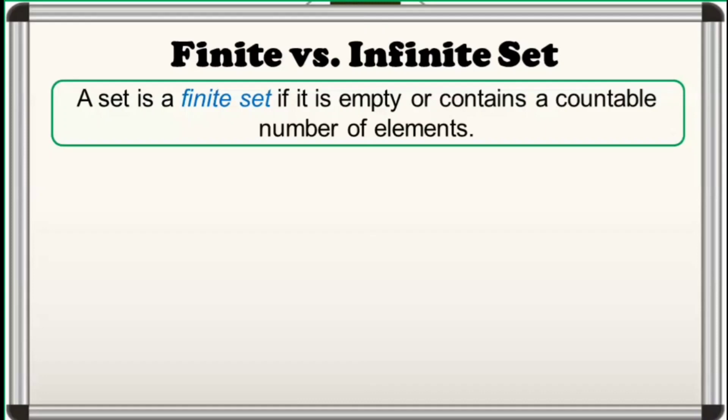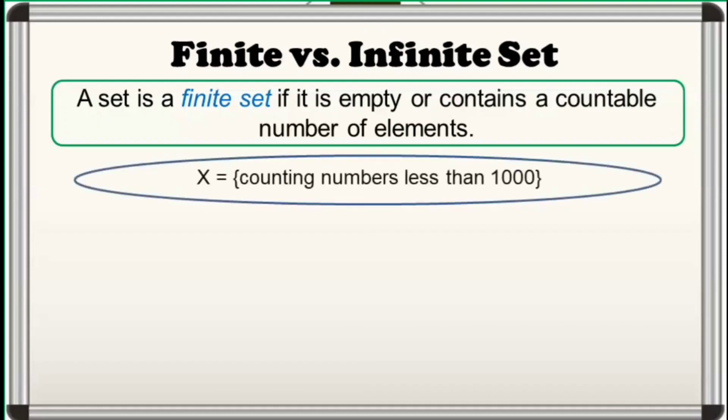For example, set X is the set of counting numbers less than 1,000. We can count the number of elements set X has. And actually, there are only 999 of them. Hence, set X is a finite set.